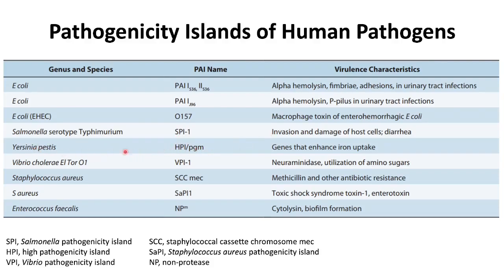Yersinia pestis is known to have a pathogenicity island named HPAI — that is, high pathogenicity island — and it encodes genes that enhance iron uptake. Similarly, Vibrio cholerae El Tor O1 has a named pathogenicity island VPI, that is Vibrio pathogenicity island, responsible for neuraminidase and utilization of amino sugars.